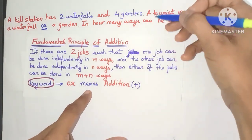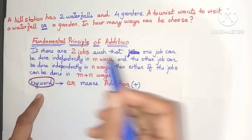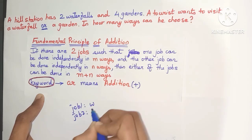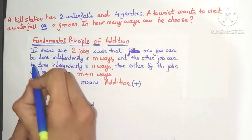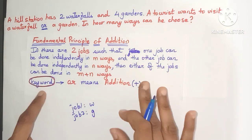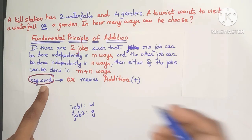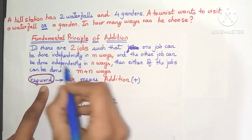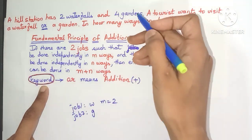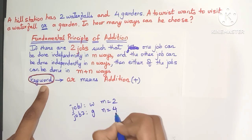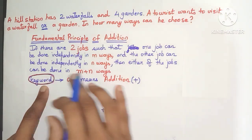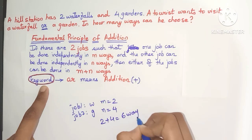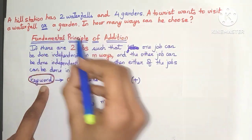This is the statement of the addition principle. Again comparing with the example: there are two jobs — visiting the waterfall and visiting the garden. One job can be done independently in N ways; I can visit the waterfall independently in two ways since there are two waterfalls, so N is two. The other job can also be done independently in N ways — I can visit the garden in four ways, so N is four. The principle says either of the jobs can be done in N plus N ways: two plus four, that is six ways to visit either the waterfall or the garden.